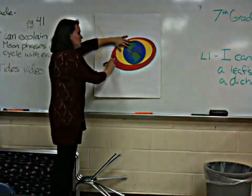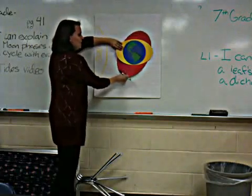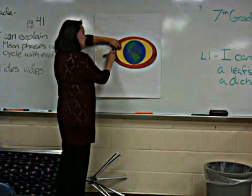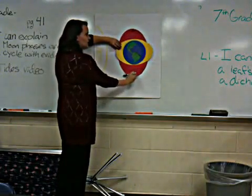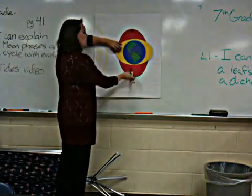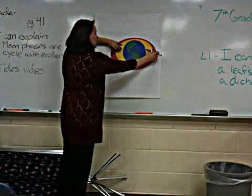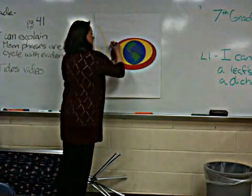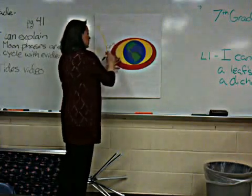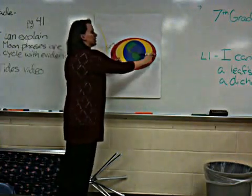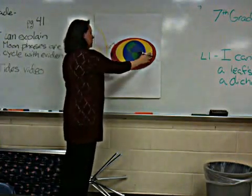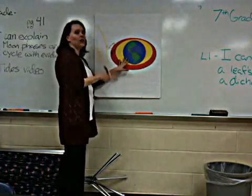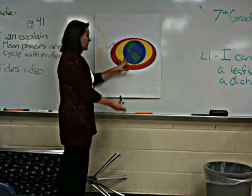Now, as the Moon goes around, sometimes they line up, like right here, and at other times they don't, like here. This is called a spring tide. This only occurs in new moons and full moons. Here, the high tide is higher than normal, and the low tide is lower than normal.